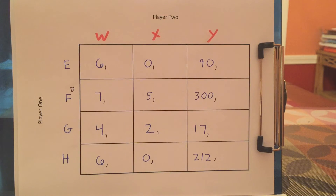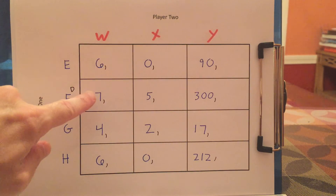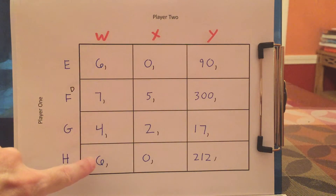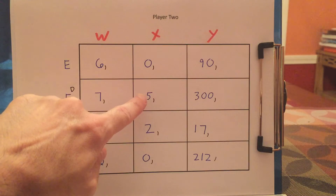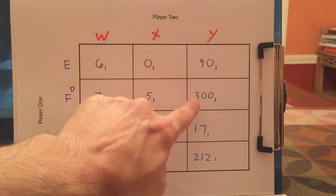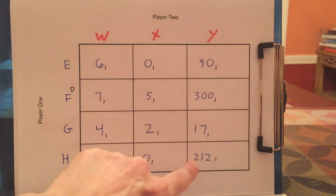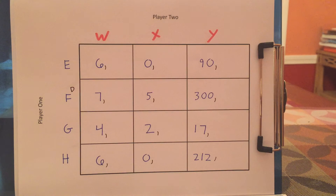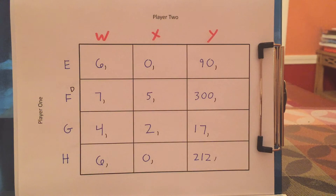Now we go to a game where the players have a few more choices. In this game, F is the dominant strategy. If W is played, you get a higher payoff from F than from E, G, or H. If X is played, you also get a higher payoff from F compared to E, G, and H. So F always gives you a higher payoff no matter what the other person does. That means player one will always play F regardless of what you could fill in for player two and regardless of whether player two is rational.